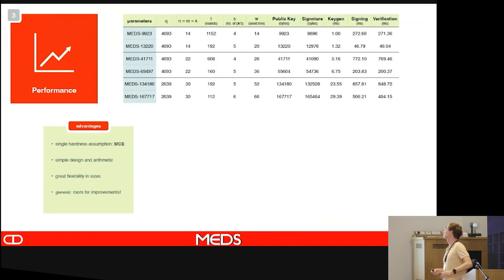What are the advantages of using MEDS? We have a single hardness assumption, MCE, which makes it easier to analyze the security of our crypto scheme and get more assurance for it. It's simple design and arithmetic. Everything we're doing is basically matrix multiplication, matrix inversion and Gaussian elimination. There's a great flexibility in sizes. We always chose ns, ms, k for our parameter sets, but of course we could play around more with this as well. The t, the s, and the w will allow us to get a greater flexibility for a specific use case.